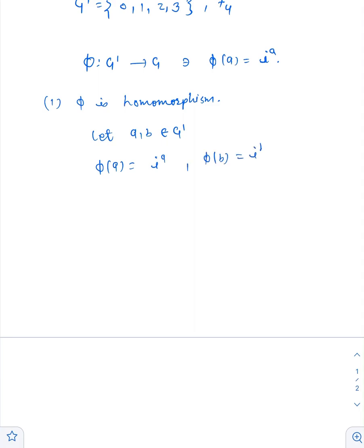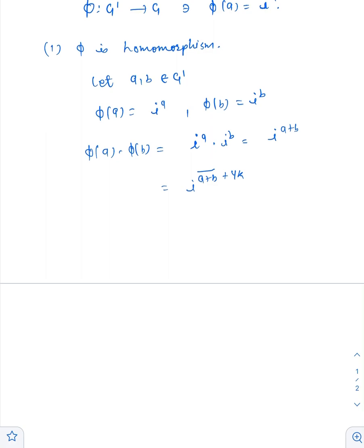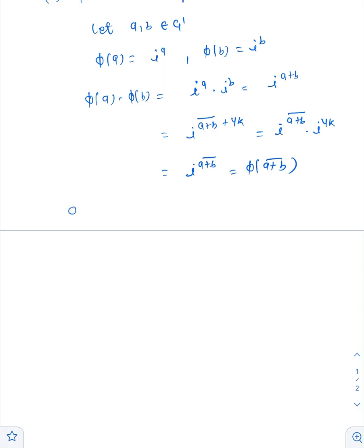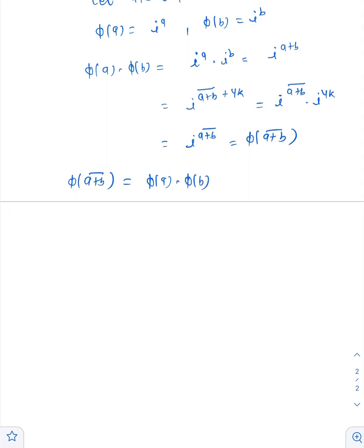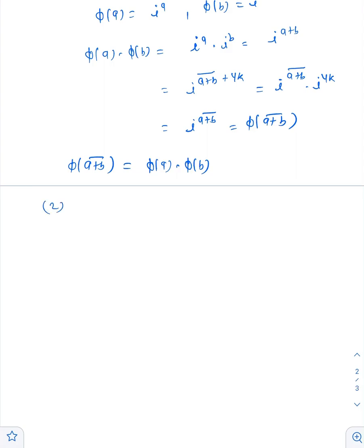phi(A) times phi(B) equals i to the power A times i to the power B equals i to the power A+B equals i to the power A+B modulo 4. We have proved that phi of A+B modulo 4 equals phi(A) times phi(B). This shows that phi is a homomorphism. Now the second part is that we need to prove that phi is one-one as well as onto.